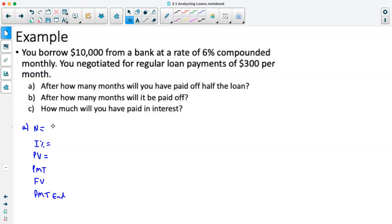We don't know our N, so we won't fill that in yet. Our I, we are told was 6%. PV is how much we owe, so it is negative $10,000. Our payments, we're making payments of $300. Now, if we have paid, this first one is when we'll have paid off half the loan. If we paid off half the loan, we're still going to owe $5,000.